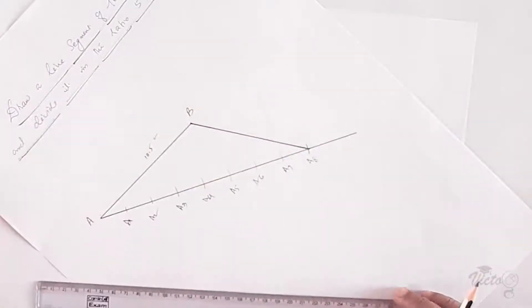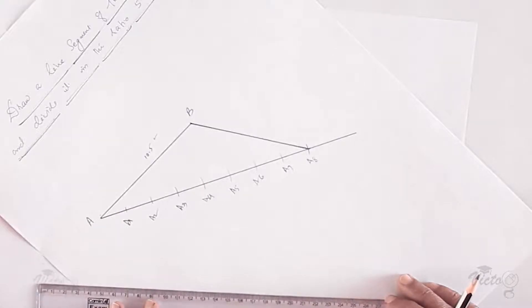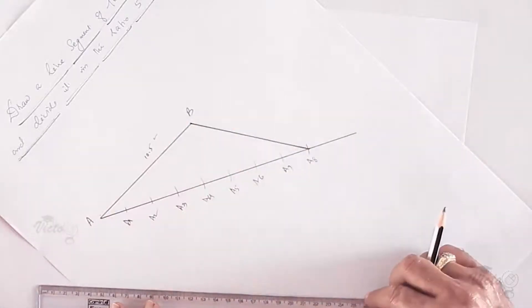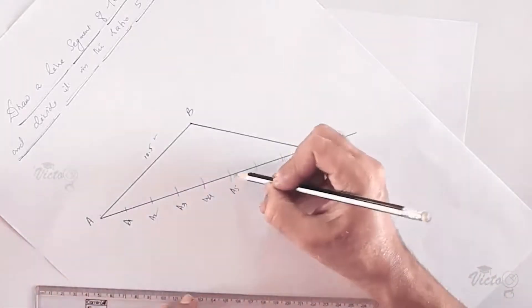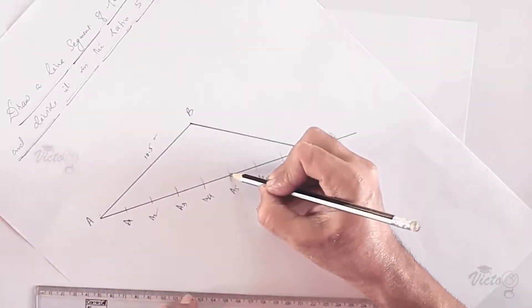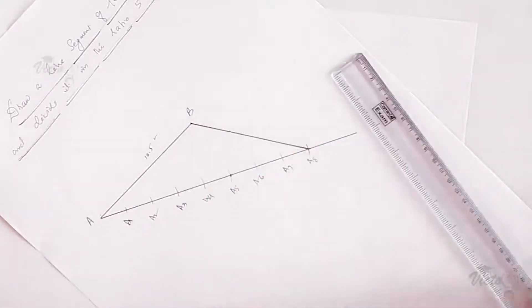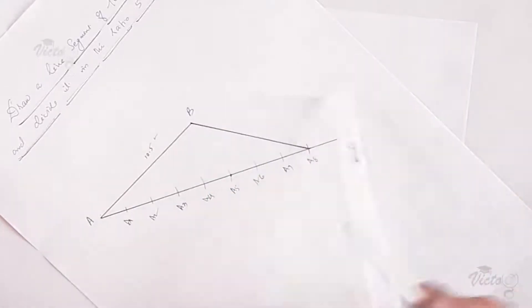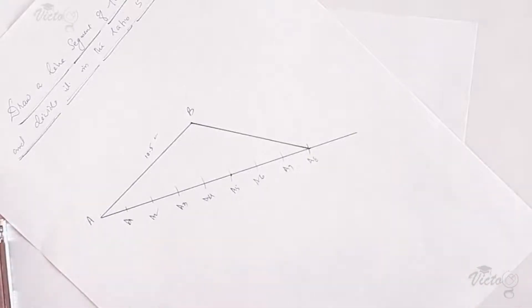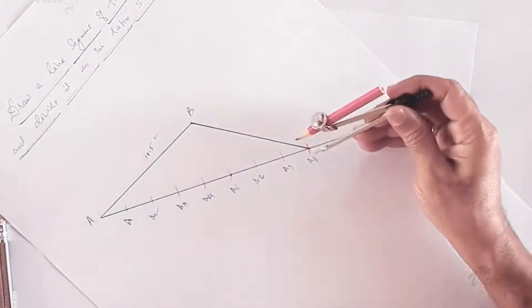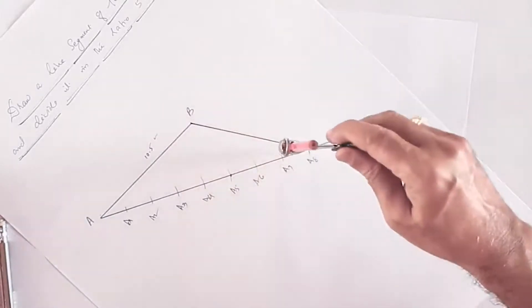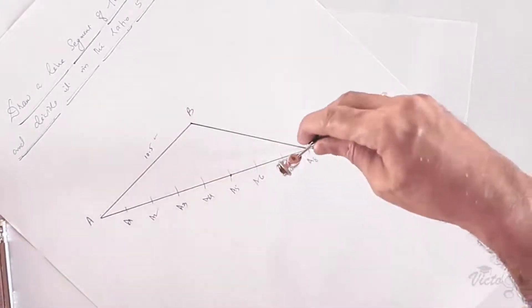Now draw a line through division point a5 which is parallel to a8B. To draw a line parallel to a8B through a5, we use the arc method.